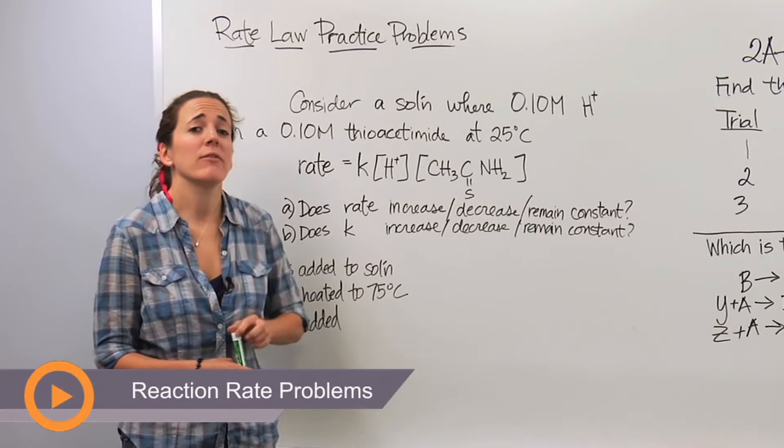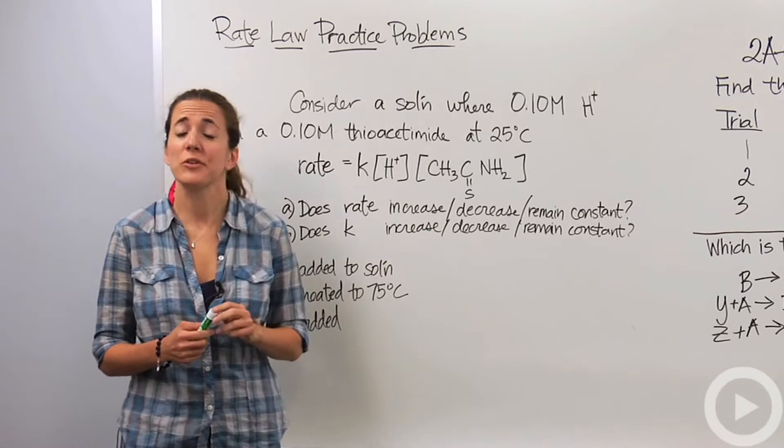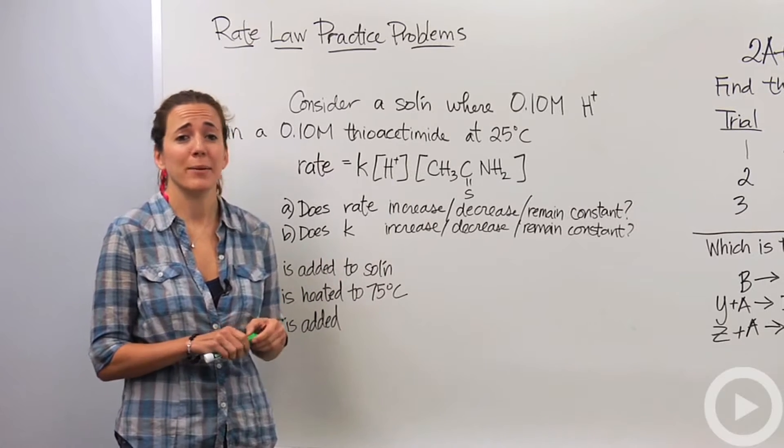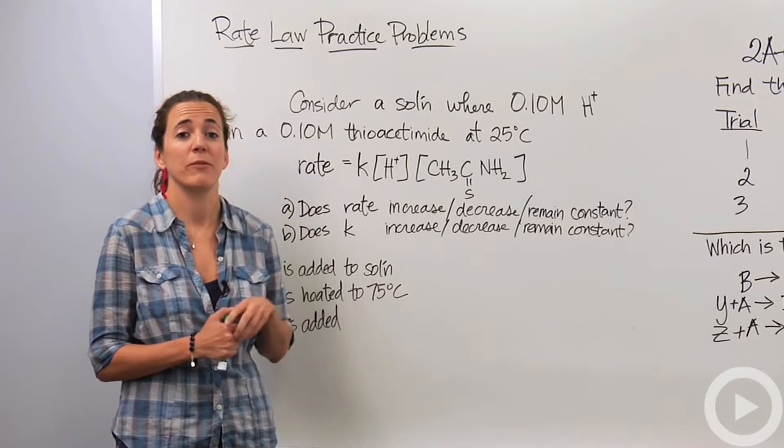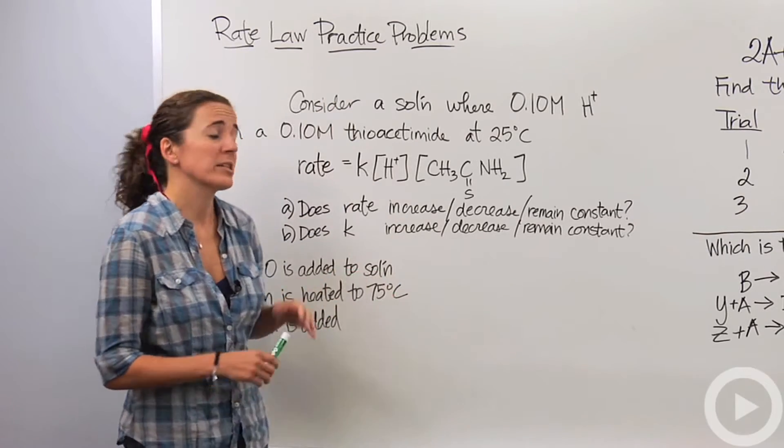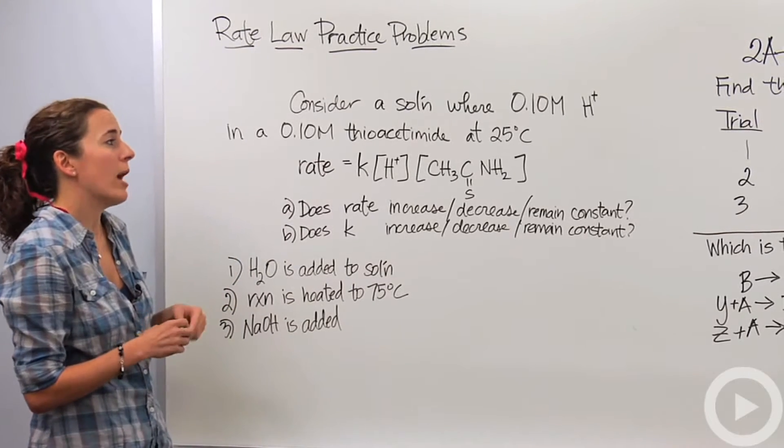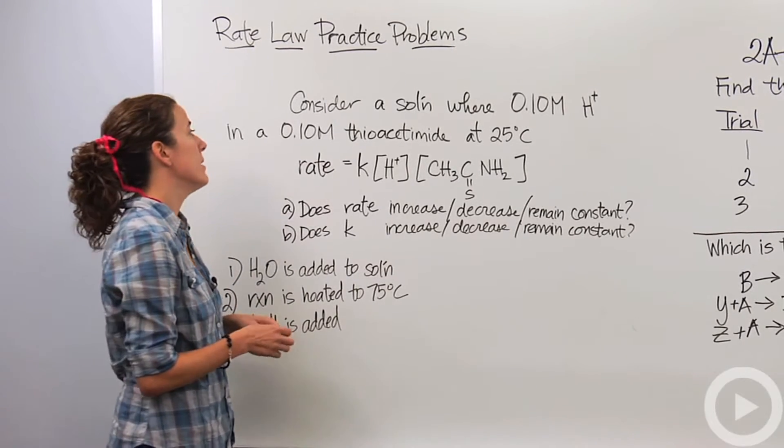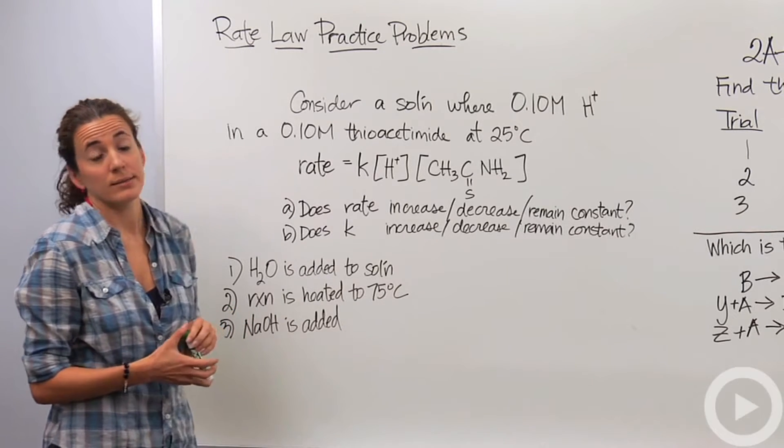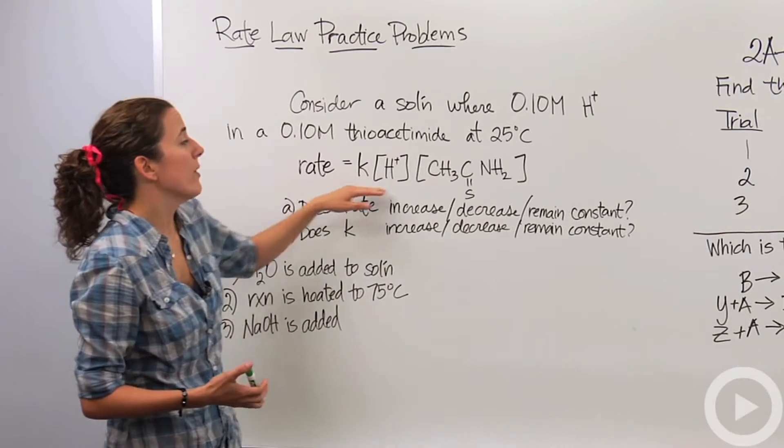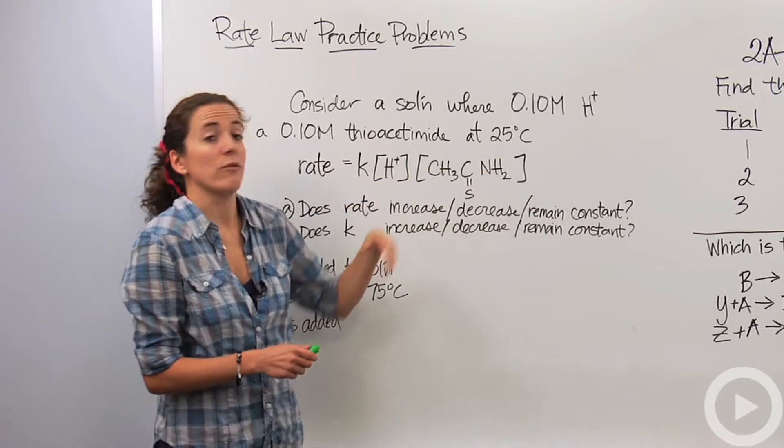When you're in the unit of kinetics and you have rate law problems, here are some practice problems that you might come across that are a little bit more difficult. Let's consider a solution where we have 0.1 molar of H+ ions and a 0.1 molar solution of thioacetamide at 25 degrees Celsius. We've determined that the rate law looks like this - it's a second order reaction, and they're both in the first order.